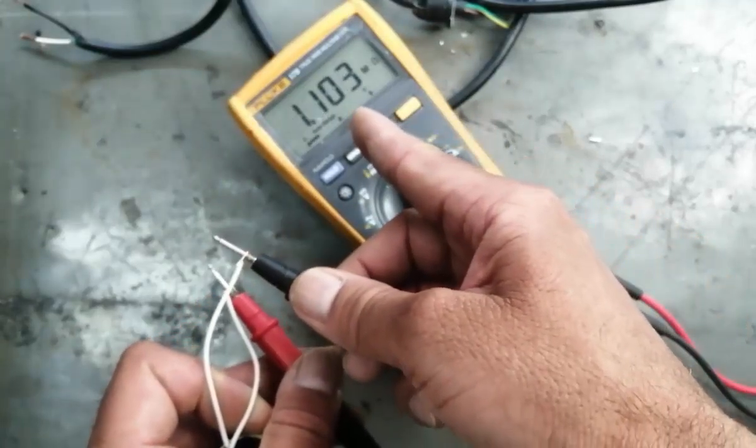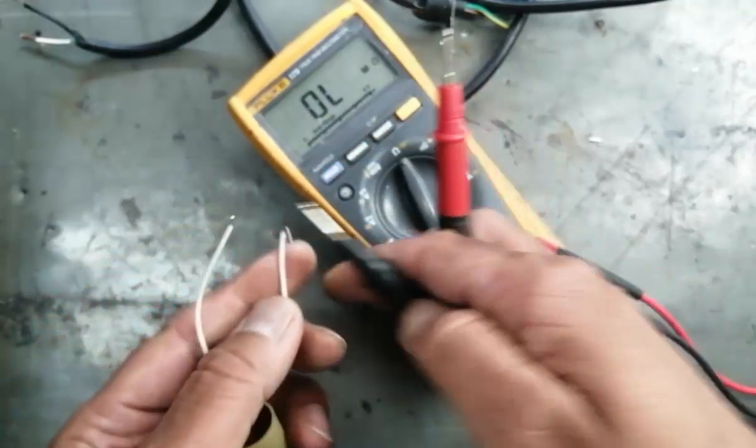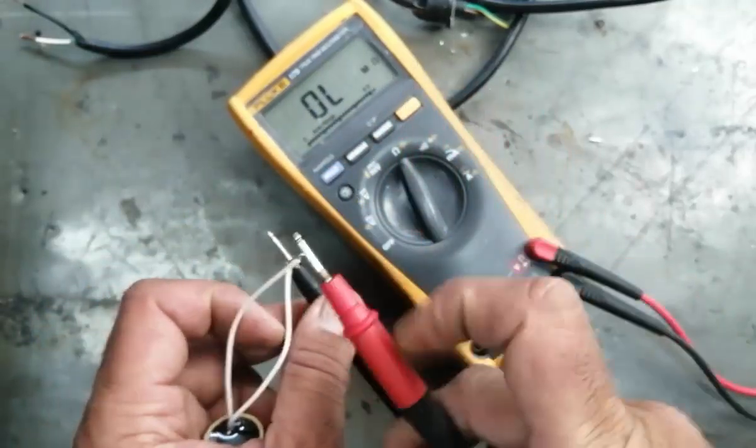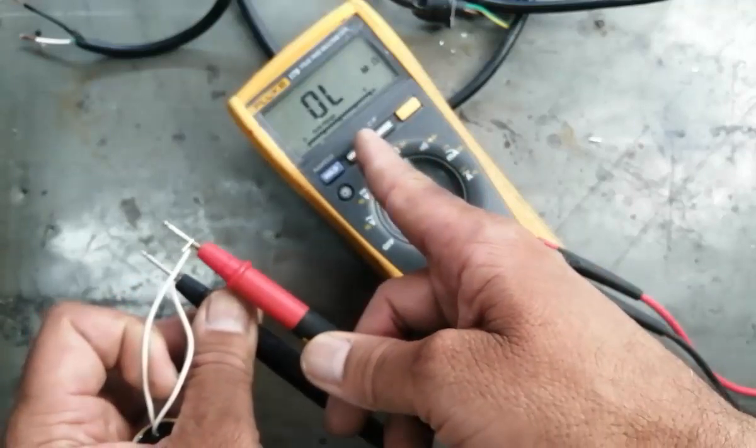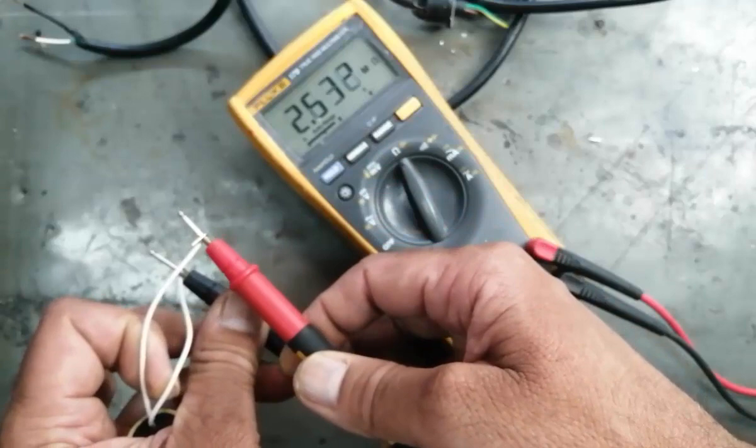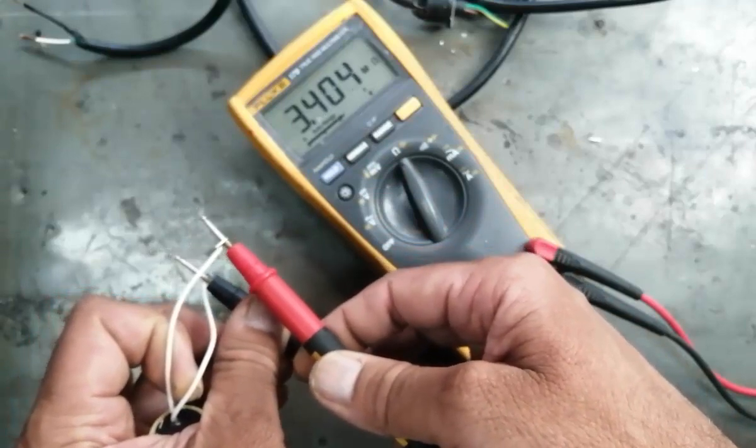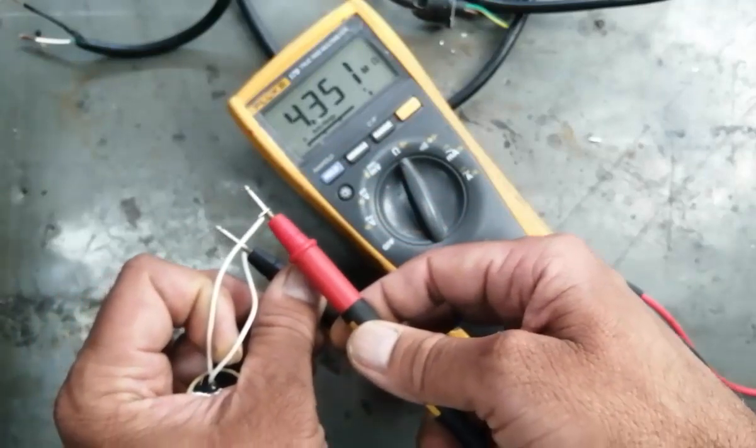Now reverse the leads. If you don't have a capacitance range, you can test like this. The resistance will start from a low level to a high level, so this capacitor is working good.